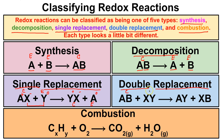In a double replacement reaction, you're typically going to have a compound plus a compound producing a compound plus a compound. Each compound has a positive ion bonded to a negative ion. Positives and negatives are attracted to one another, so A and Y bond to produce AY, and X and B bond to produce XB. When writing chemical formulas for these compounds, the positive ion always comes first, followed by the negative ion.